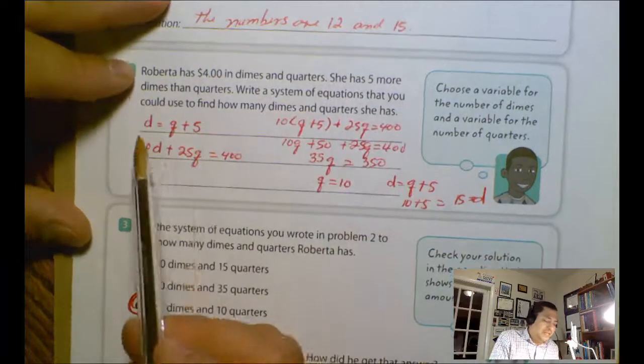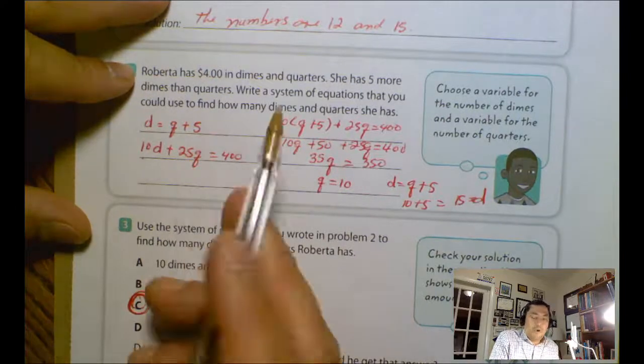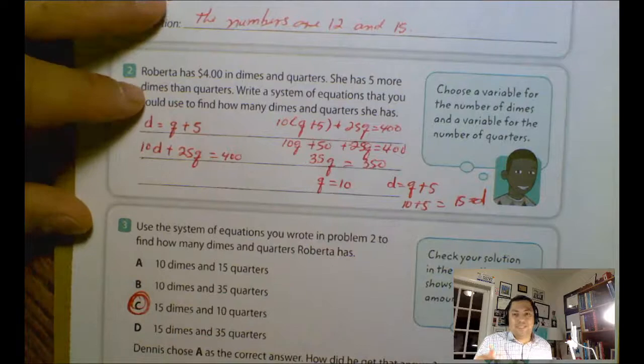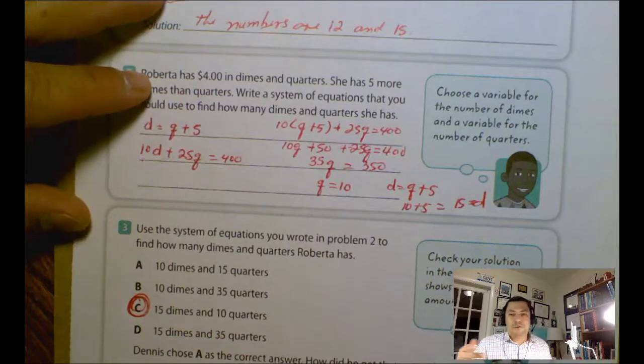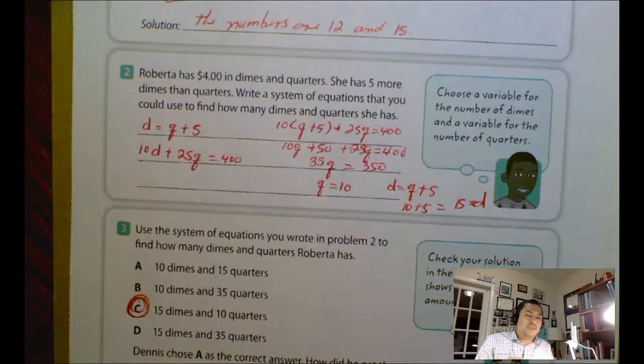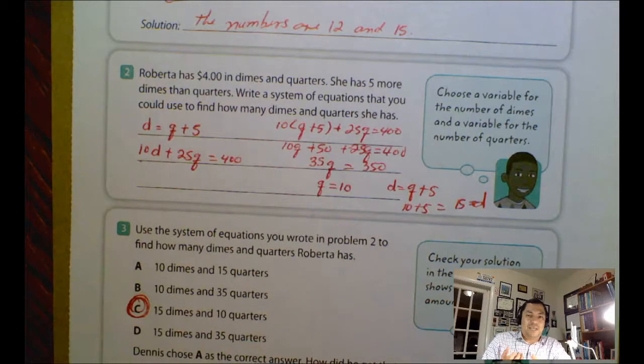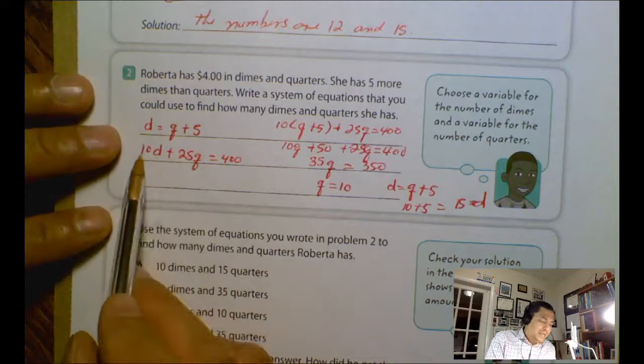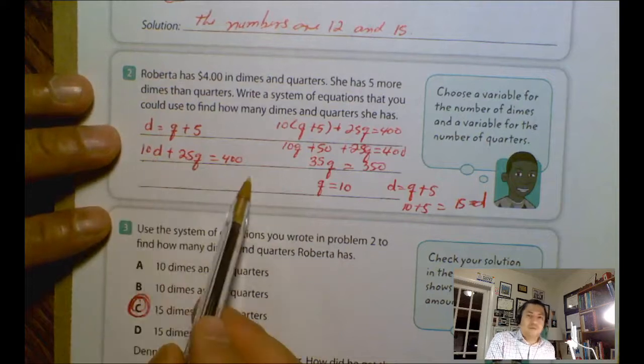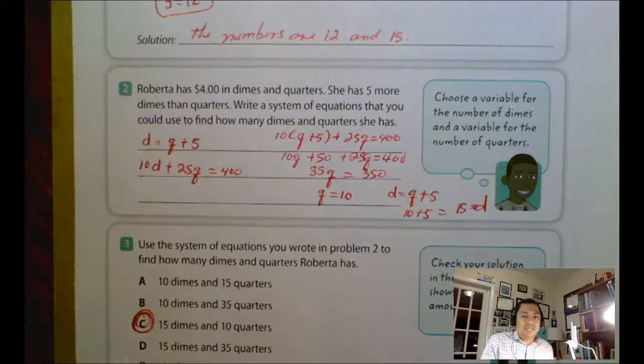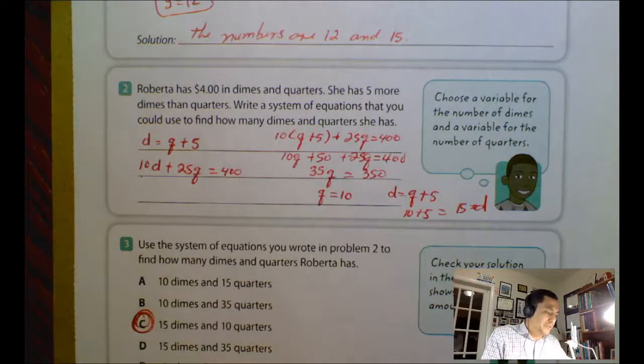Now, if you ask where this 10 and 25 are coming from: remember that a dime is 10 cents, 0.10, the quarter is 0.25. So to get those decimal numbers away, we need to multiply both sides of the equations by a number that is going to eliminate that decimal. In this case, I did it by 100. So it will give me 10, 25, and 400. Those decimal numbers are going away, and we can solve easily without the problem of decimals.